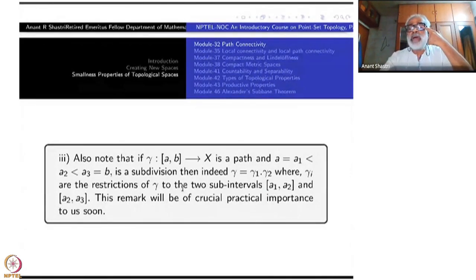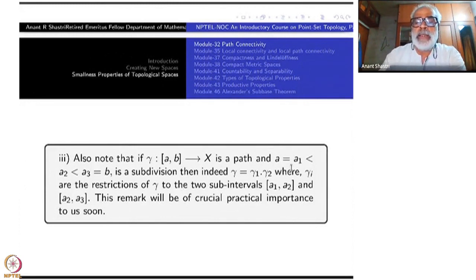Also note that if gamma from ab to x is a path and a less than a1 less than a2 less than a3 equals b, suppose you take a division, cut the interval into two parts. Then you can think of this gamma as gamma 1 dot gamma 2 where gamma i's are the restriction of the original gamma to the sub-intervals. This remark will be of practical importance for us. This can be done for finitely many divisions also.